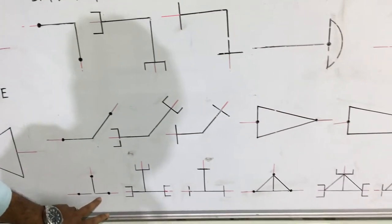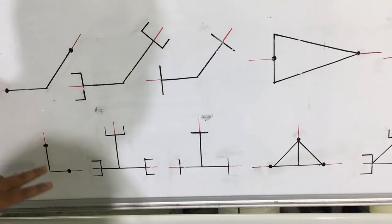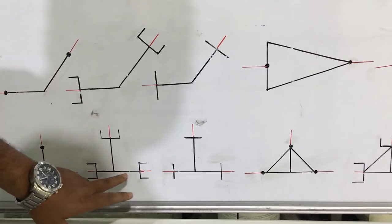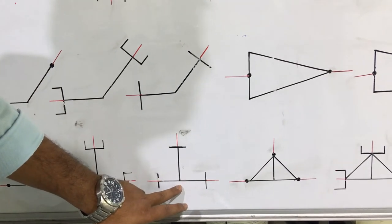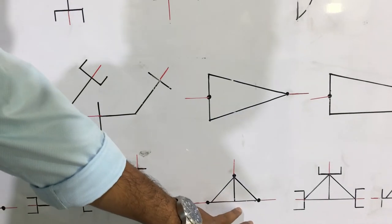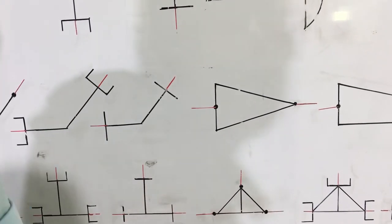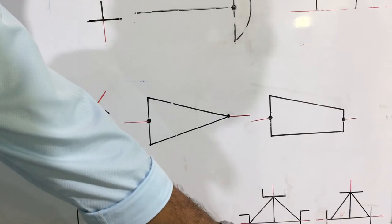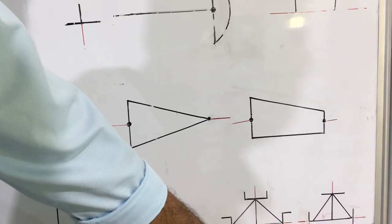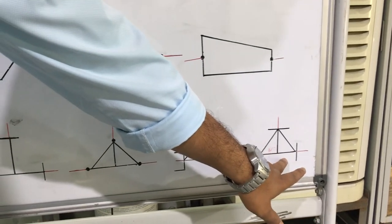This is the symbol of butt weld equal tee. This one is socket weld equal tee, and this one is threaded equal tee. This is reducing T — this is the symbol of reducing T. This one is socket weld reducing T, and this one is threaded reducing T.